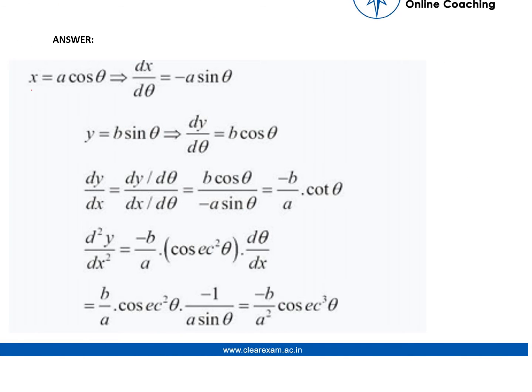Coming to the next line, we can see that we've taken x as a cos theta. Here we are finding dx by d theta, so we get minus a sine theta. Then we've taken y as b sine theta, then we've found dy by d theta which is b cos theta.